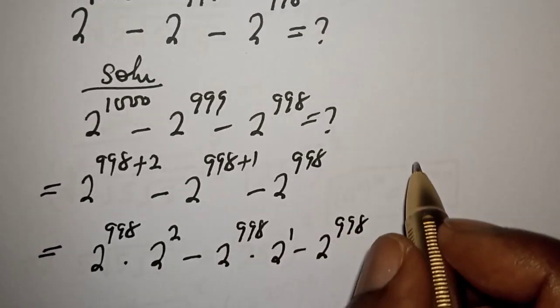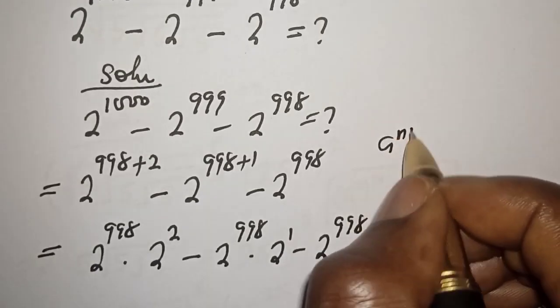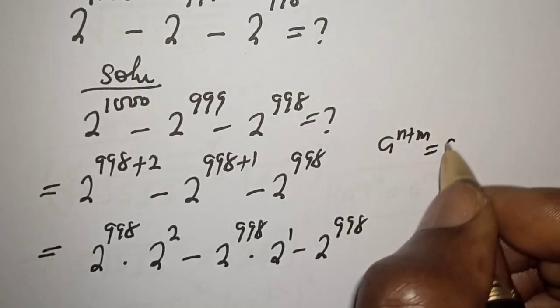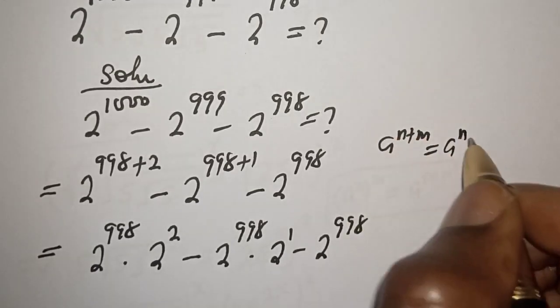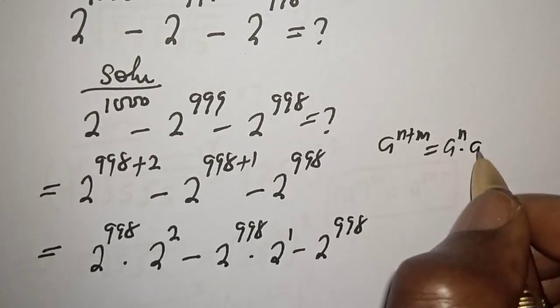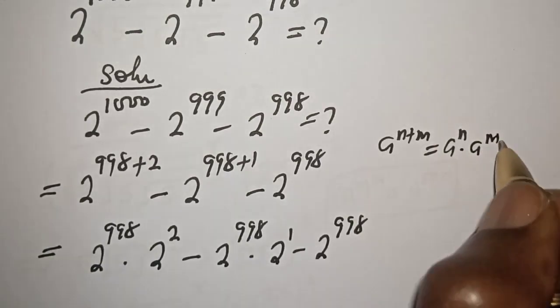That is, using the rule: if you have a raised to power n+m, this is equal to a raised to power n multiplied by a raised to power m.